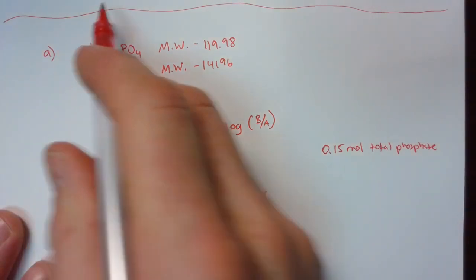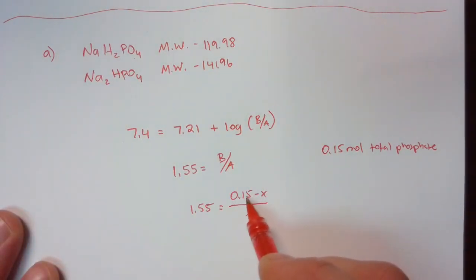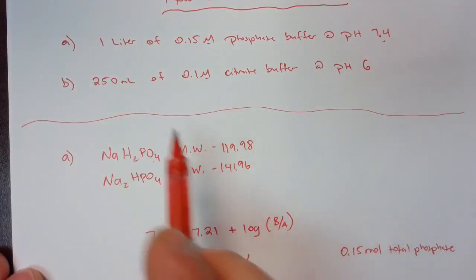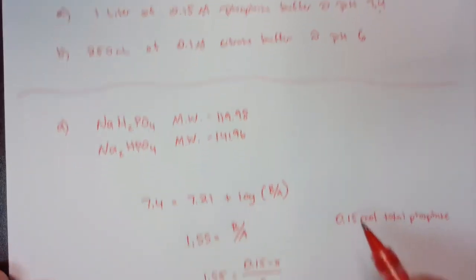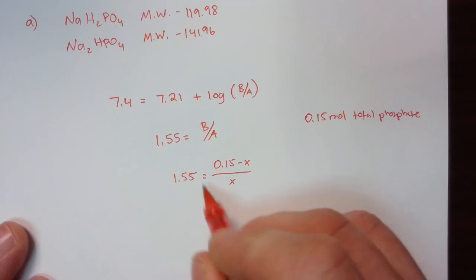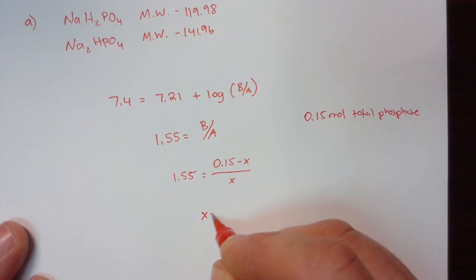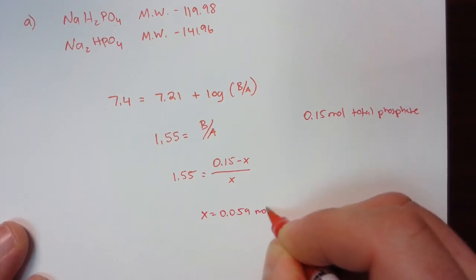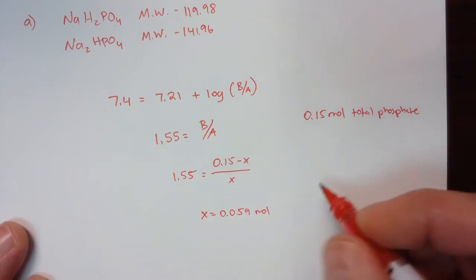We'll see in the next problem it won't be 0.15, it'll be less than that because we are not making one liter of the citrate buffer but rather a quarter of a liter. Okay, so once we solve for this we get an x of 0.059 moles and again that's the moles of acid.